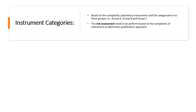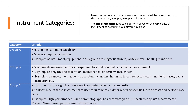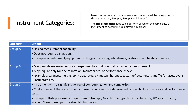Now in this slide, we will discuss the instrument categories. Based on complexity, instruments are categorized into three groups: Group A, Group B, and Group C. Apart from this, a risk assessment also needs to be performed based on the complexity of the instrument to determine the qualification approach. Group A instruments are those which have no measurement capability and do not require any calibration. Examples of Group A instruments include magnetic stirrer, vortex mixer, heating mantle, etc.